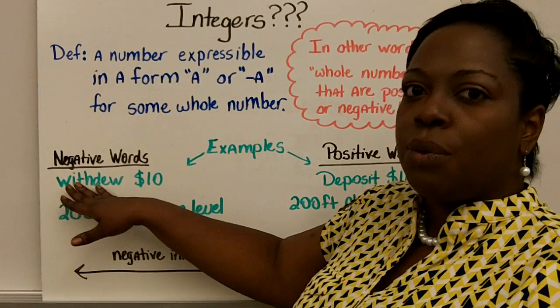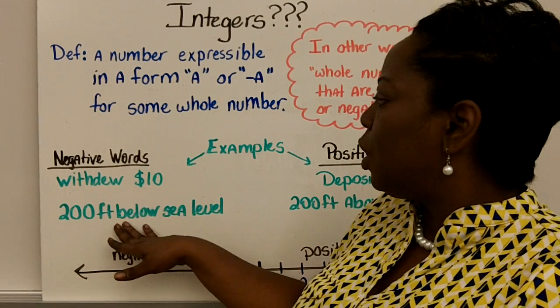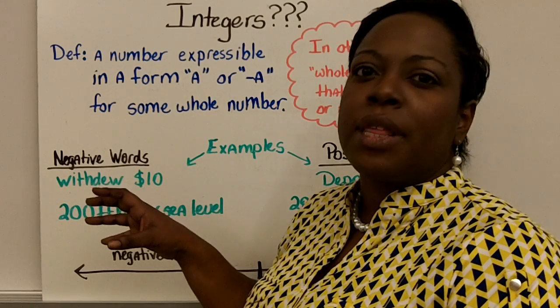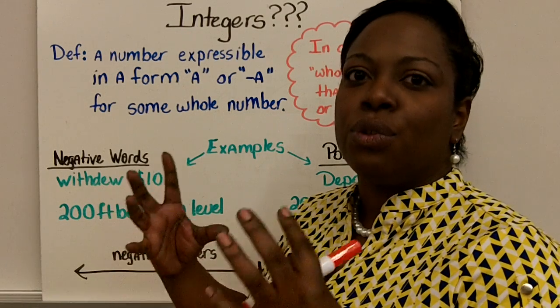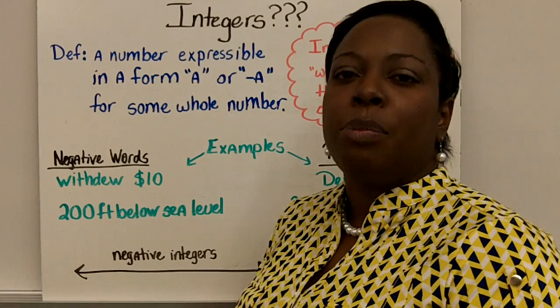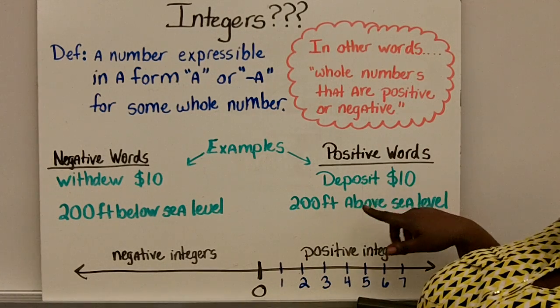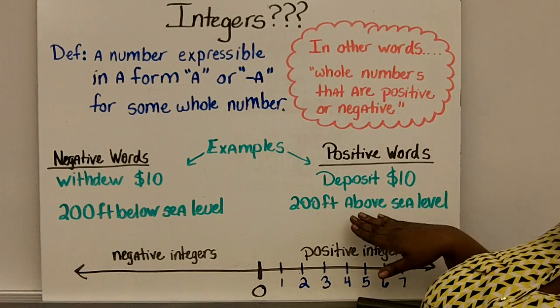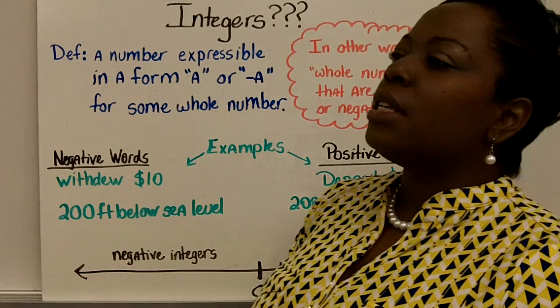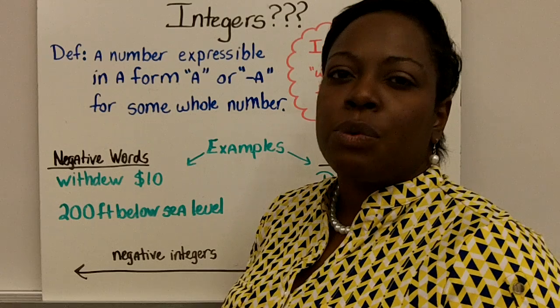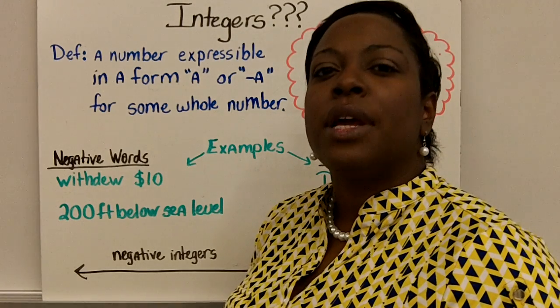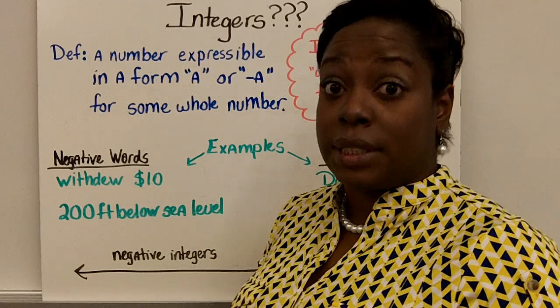And there are some words for negative. A few of the most common ones: withdraw or below. Any word that involves a value declining would be a negative word, whereas the opposite of that would be positive words. Some common ones: deposit and above sea level. Again, positive words would be represented by any words that would show a quantity increasing.